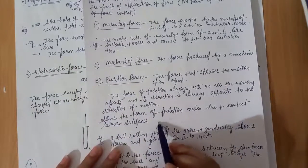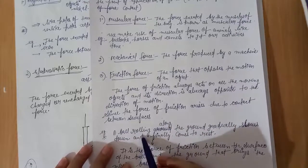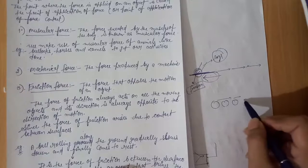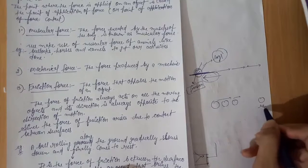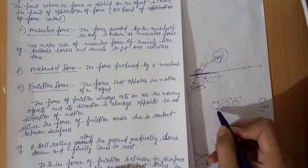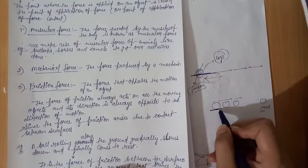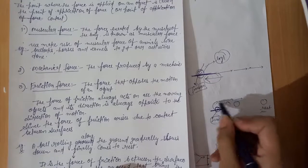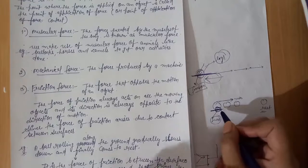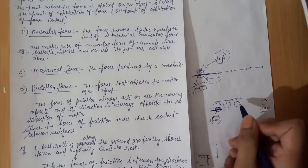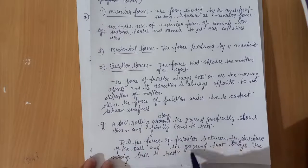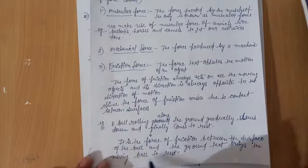The force of friction arises due to contact between surfaces. Example of friction: a ball rolling along the ground gradually slows down and finally comes to rest. This is because a friction force acts between the ball and the surface on which it is rolling — this contact creates a friction force that opposes the motion of the ball and gradually reduces its speed, finally bringing the ball to rest. It is the force of friction between the surface of the ball and the ground that brings the moving ball to rest.